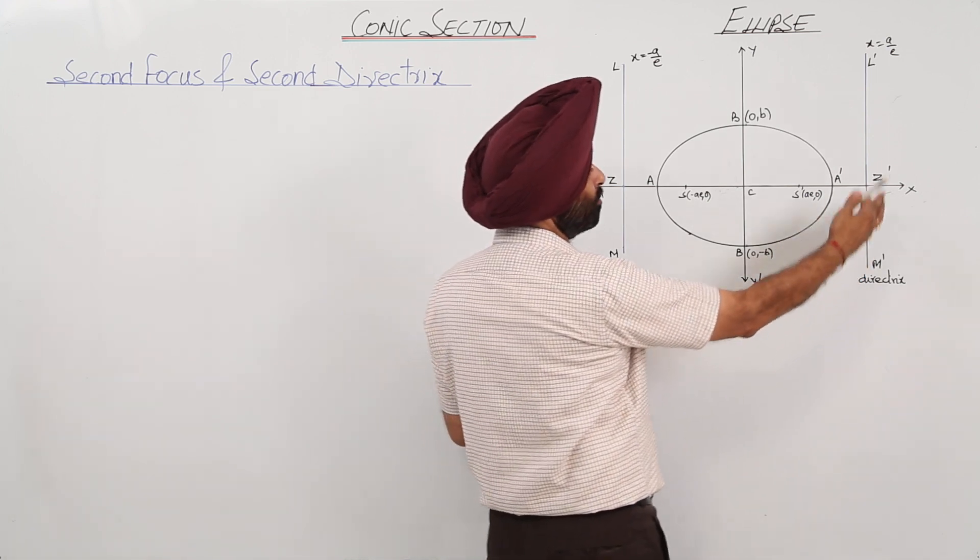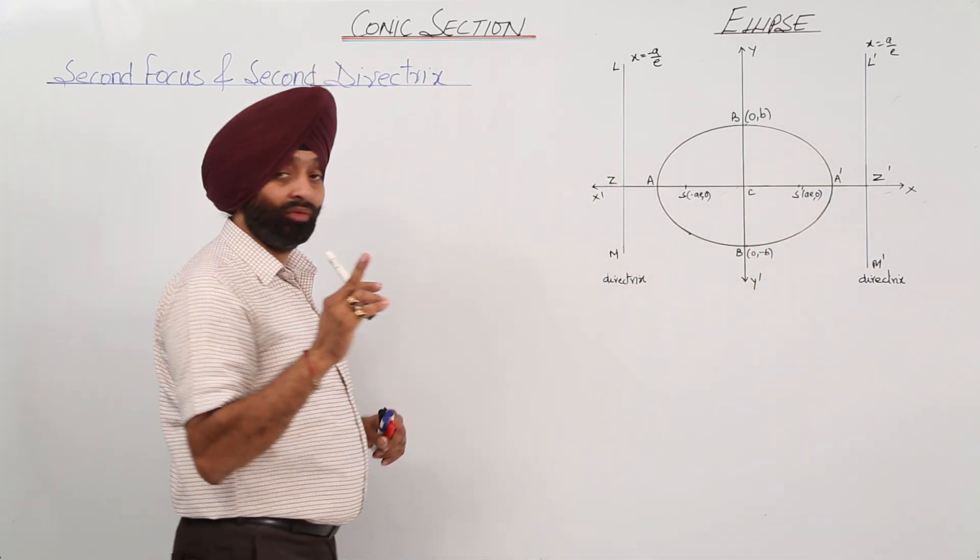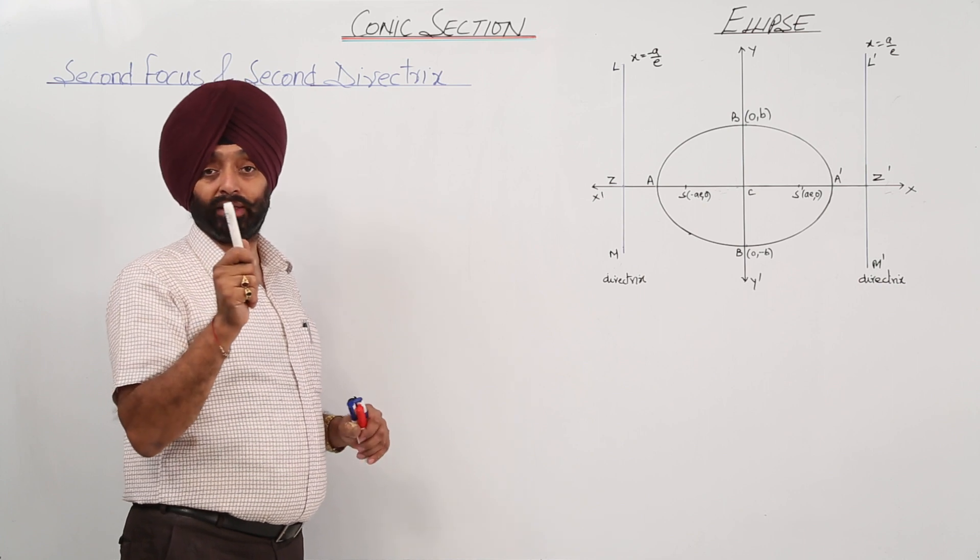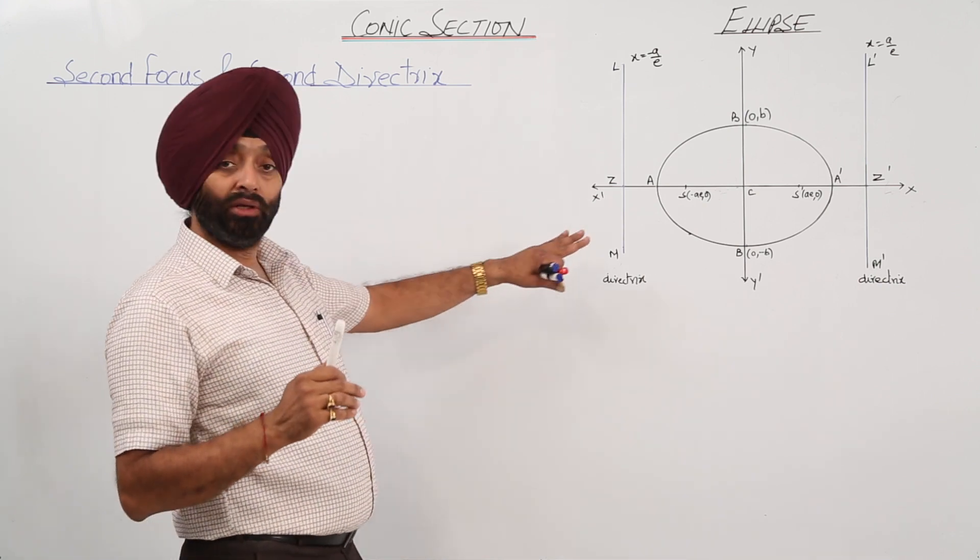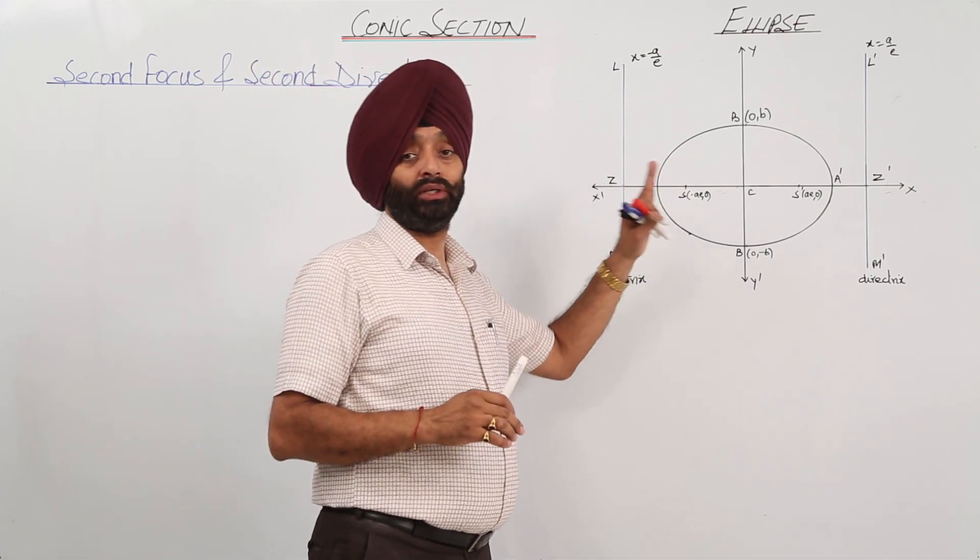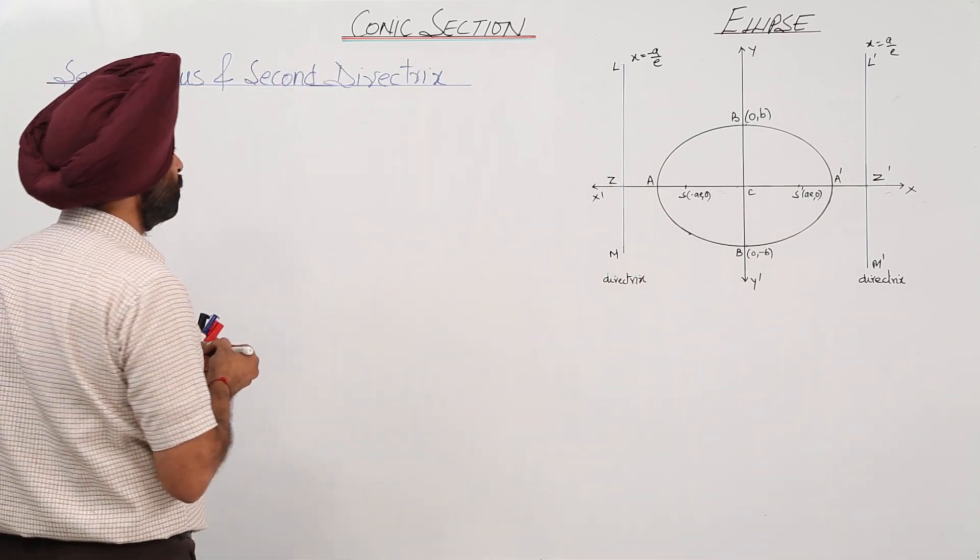The line in the blue is the directrix. As in a parabola we were having only 1 focus and 1 directrix, same in an ellipse we are having 2 focus and 2 directrix. So let me explain you now.